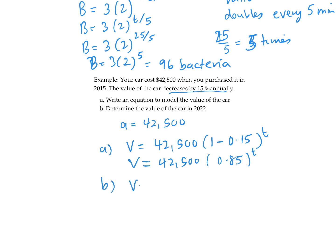That's my model. How many years have passed? We bought the car in 2015 and we're finding the value in 2022—that's seven years. So it's to the power of seven. We'll do 0.85 to the power of 7, multiply that by 42,500. The car is now worth $13,624.53.